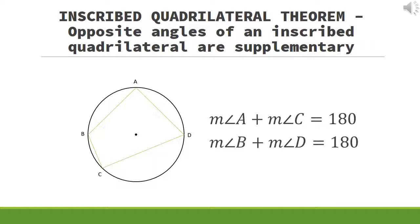The last theorem is the inscribed quadrilateral theorem. Opposite angles within an inscribed quadrilateral are supplementary. In the figure below, the measure of angle A and the measure of angle C will have a sum of 180, and the measure of angle B plus the measure of angle D will have a sum of 180 as well.